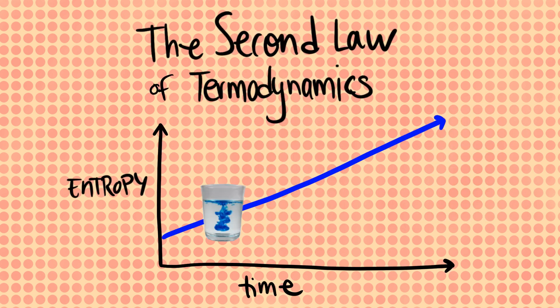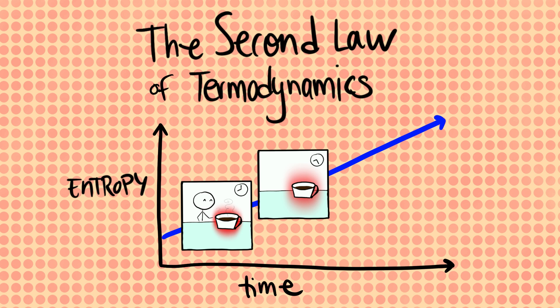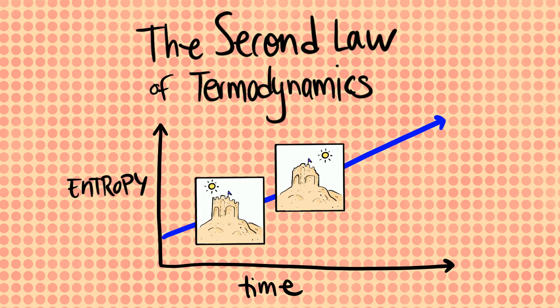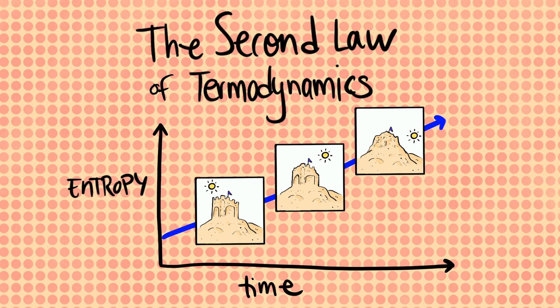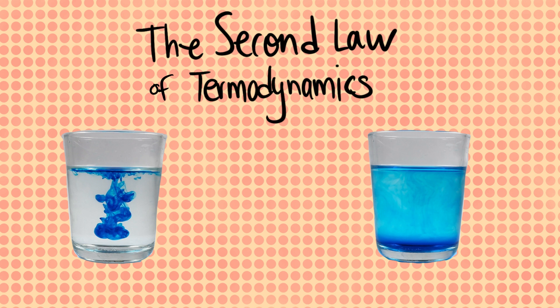So if you wait long enough, ink will spread and mix with water. Similarly, heat flows and spreads around the room instead of being concentrated in the coffee mug. And the nice ordered structure of a sandcastle crumbles down into a messy pile of sand grains. So disordered states are much more likely than ordered states, and that determines the sequence in which things can spontaneously happen.